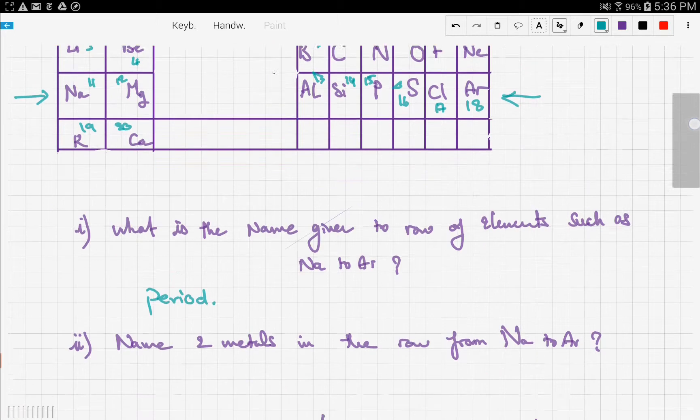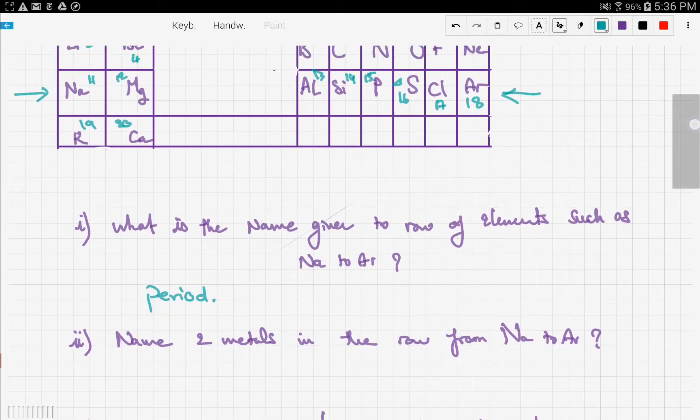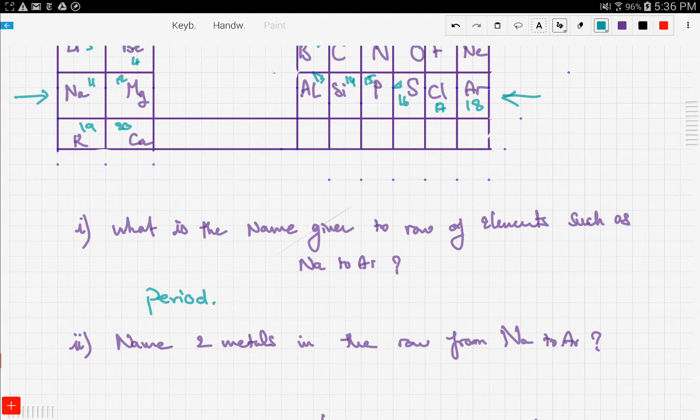The second question says name two metals in the row from sodium to argon. We said in previous videos that metals exist on the left hand side of the periodic table. This is the left hand side, this is the right hand side, and metals are usually on the